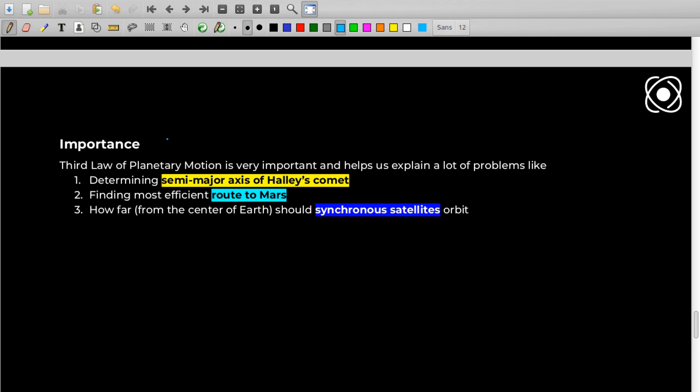As I said, Kepler's third law is widely used in astronomy as well. Let me show you three important applications of the third law. The first one is it was used in determining the semi-major axis of Halley's comet. Then it is also used in finding the most efficient route to Mars. And then it is also used to place synchronous satellites in its right orbit, finding the distance of the orbit to place geosynchronous satellites.